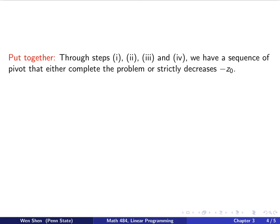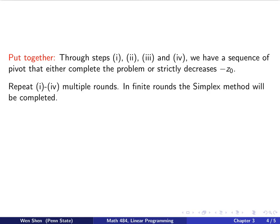Now let's put them together. And all these steps, we have talked step 1, 2, 3, 4. Through all these steps, now we have a sequence of pivot that either completes the problem or would strictly decrease the value minus z0. We could repeat this loop multiple rounds, and infinitely many steps of rounds, the simplex method will be completed. So now we can conclude that for case a, where not all the bi's are 0, then there exists a sequence of pivoting, possibly complicated, but there exists such that the simplex method for the problem will be completed.